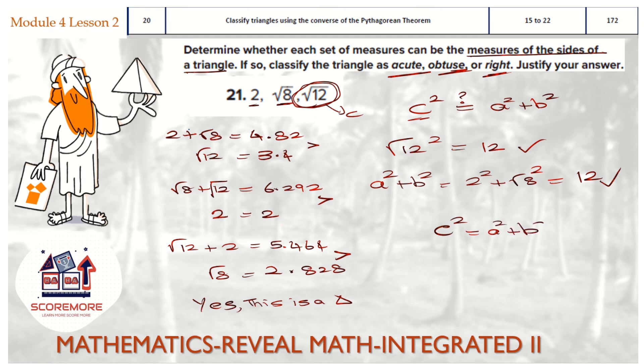Okay, so here, I get 12 and 12. So c squared is equal to a squared plus b squared. Of course, so this is going to be a right triangle.